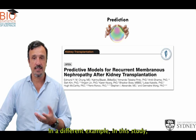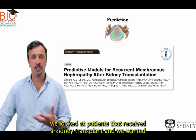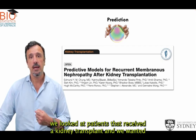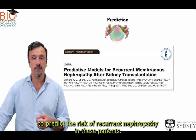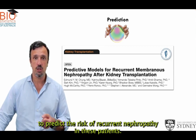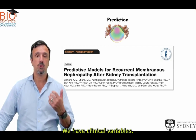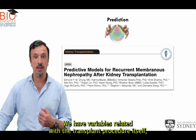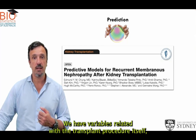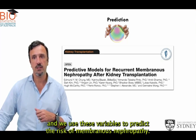In another example, we looked at patients that received a kidney transplant and wanted to predict the risk of recurrent membranous nephropathy. We had demographic variables, clinical variables, and variables related to the transplant procedure itself, and we used these variables to predict the risk of membranous nephropathy.